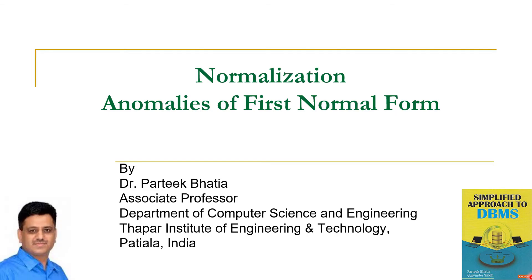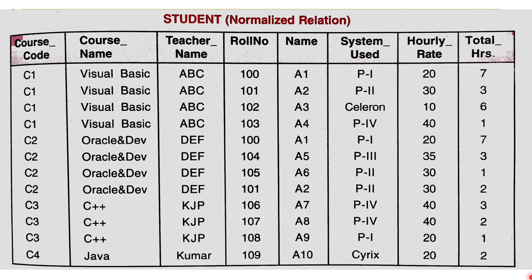Namaskar. Myself Pratik. In this session we will discuss anomalies of first normal form. In the previous session we discussed this student table. We have already normalized it using first normal form. In every row-column combination we have a single value, meaning there is no repeating group, so the data is in first normal form.